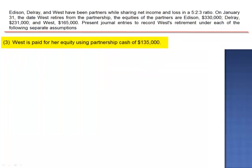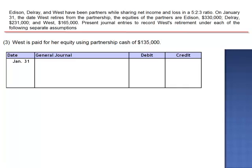Assumption 3. West is paid for her equity using partnership cash of $135,000. Again, we need to maintain the relationship between assets and equity. Since the assets are only decreasing by $135,000, the same can be said for equity. We know that West's capital account will be decreased for $165,000, but cash is only credited for $135,000.